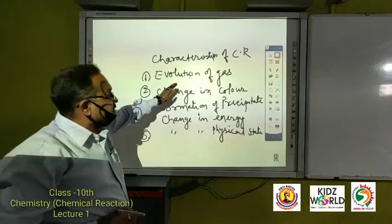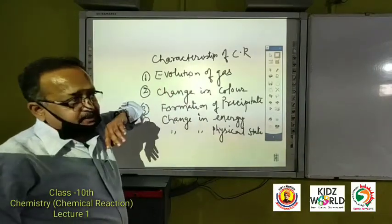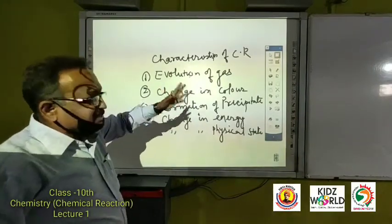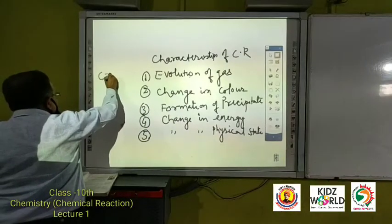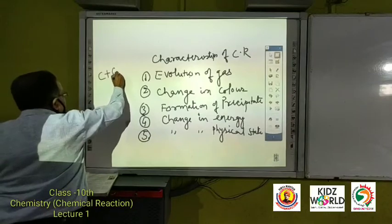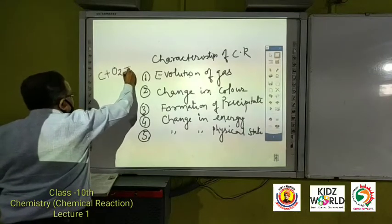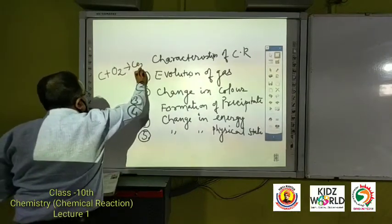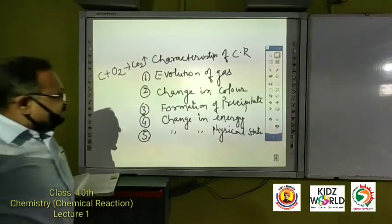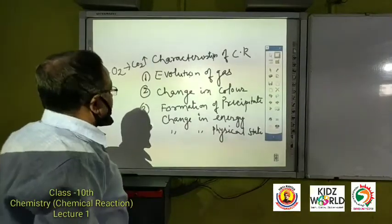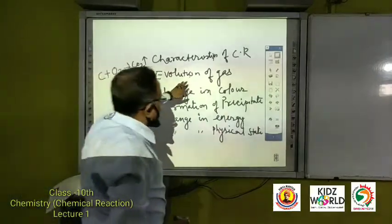Very simple example: if you burn coal, coal is carbon, and it burns with oxygen, it will form CO2. This is the type of reaction in which evolution of gas you can see.